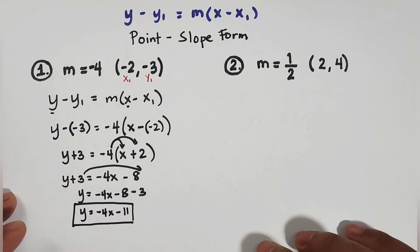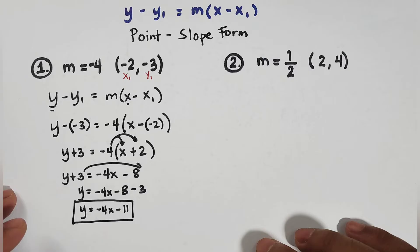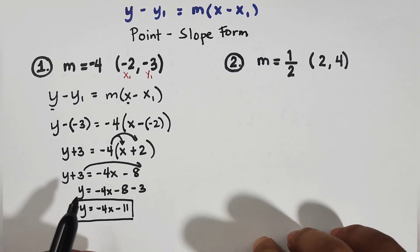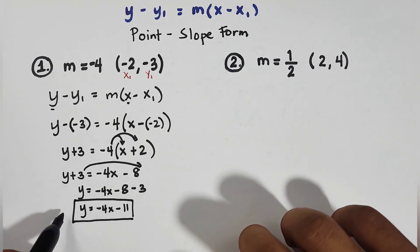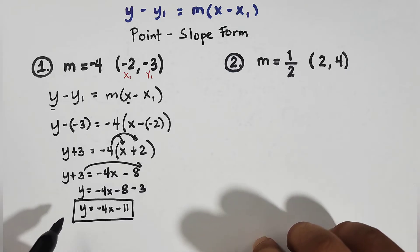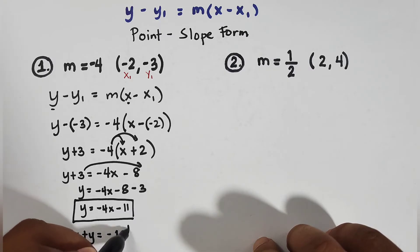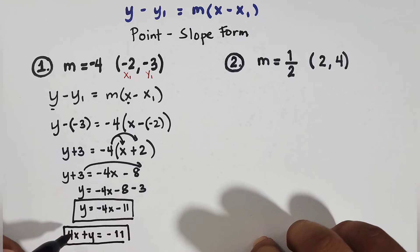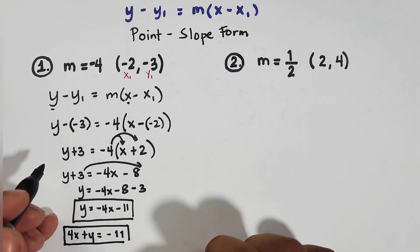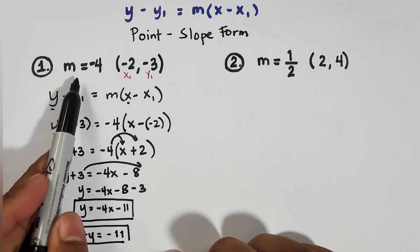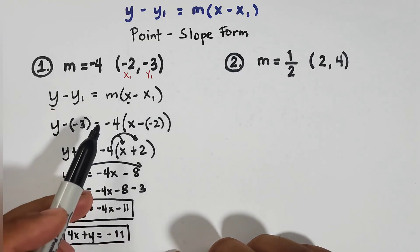Now let's go with the standard form. For the standard form, we will transpose negative 4x to the other side. It will become positive 4x. So the standard form is 4x plus y equals negative 11. These are the two forms that we have. So I hope you got the pattern on how to use the point-slope form using this slope and the coordinates of a single point. Now let's move on to item number 2.